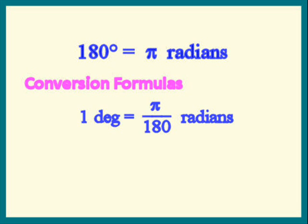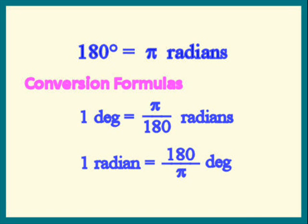Going the other way, divide both sides by pi. We get 1 radian is 180 over pi degrees. This is where the 57 degree approximation comes from.